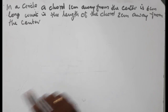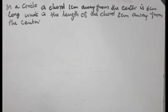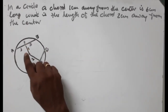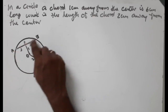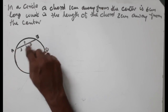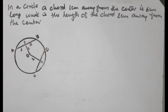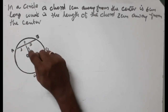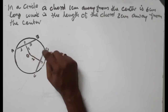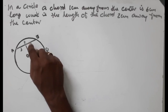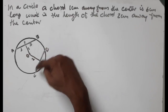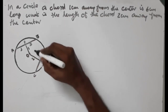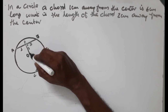I am going to show you the same thing with a rough figure. What you see in a circle: one circle of 1 cm, the length from center is 6 cm. We will join O and B. This is a right angle.